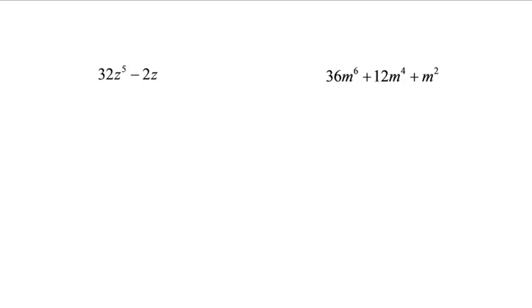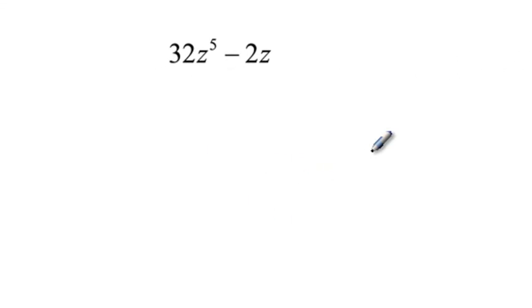And then, finally, two other ones. Some of you are probably flipping out a little bit when you look at this and say 32z to the fifth minus 2z. Well, we don't know z to the fifth, but it's not on my sheet. But what's the first thing on your factoring flowchart? Factor out the common monomial. What's common between 32z to the fifth and 2z? Well, 2z is. And if I do that, I get 16z to the fourth minus 1.